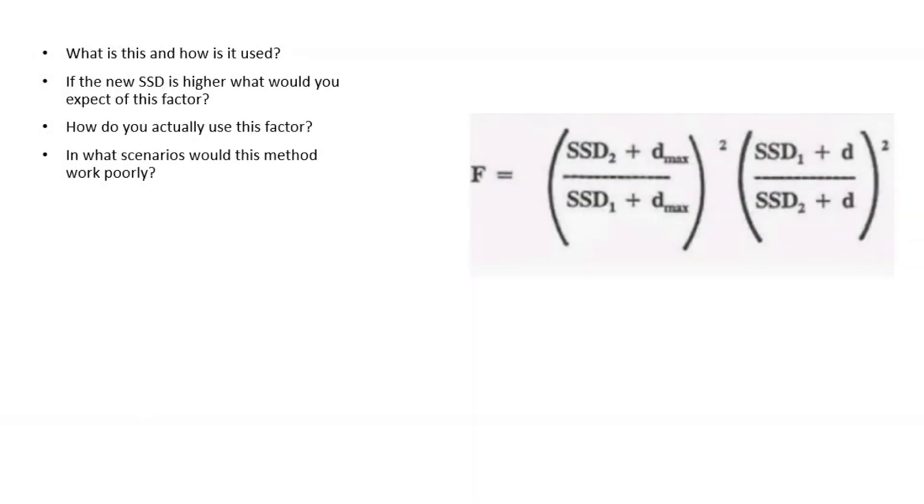For this practice, let's say you receive an equation like right here. A common question or set of questions may be: what is this? How is it used? If the SSD that is new is higher, what would you expect of this factor? How do you actually tangibly use this factor? And in what scenarios would this method work poorly?